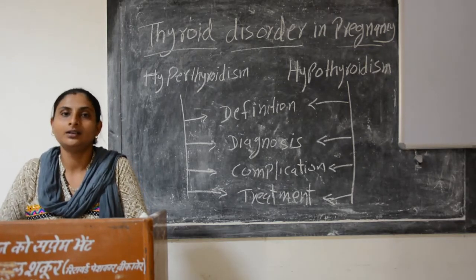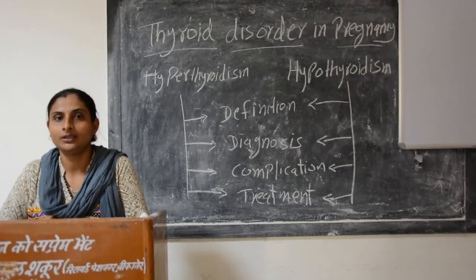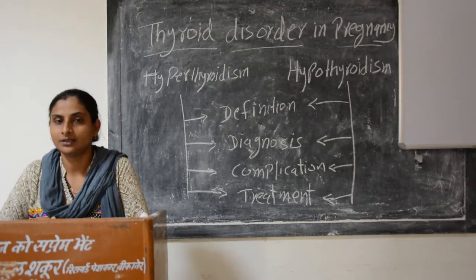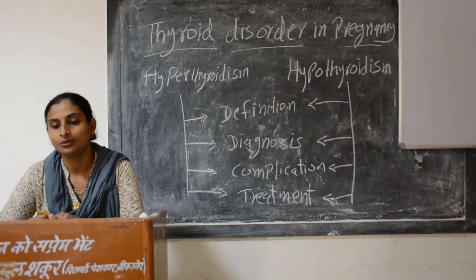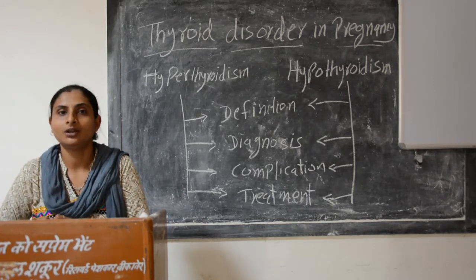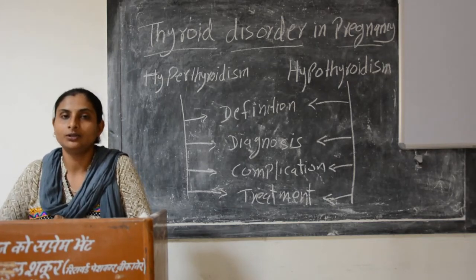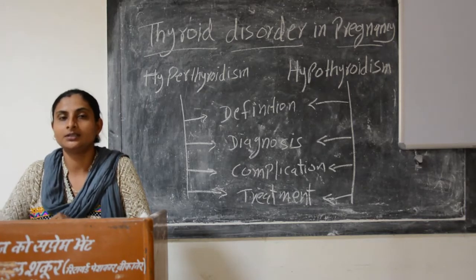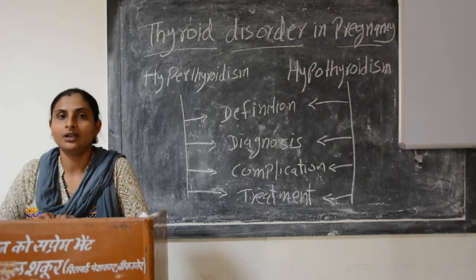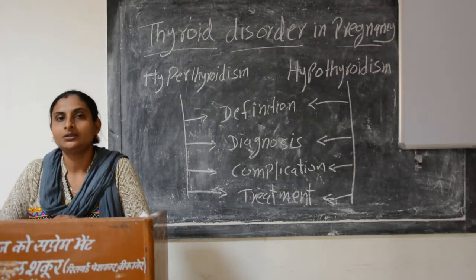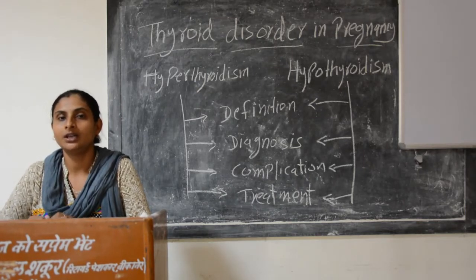The thyroid gland is located in our neck and is a small gland that secretes two hormones. Thyroid hormone secretion is very essential for fetal development and brain development.